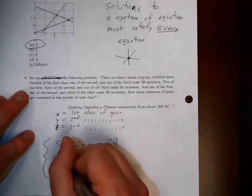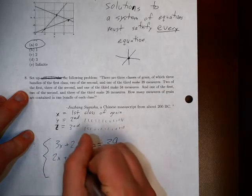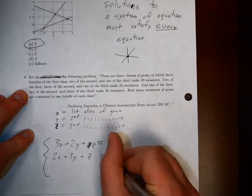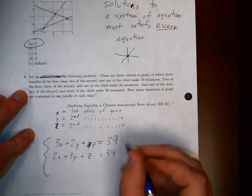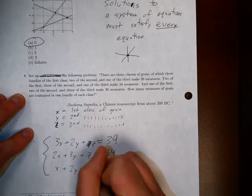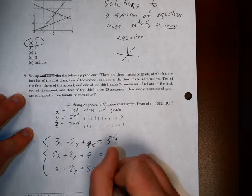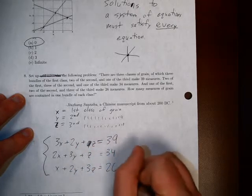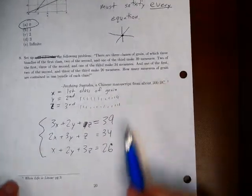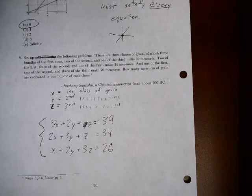Two of the first, plus three of the second, plus one of the third, makes 34. And one of the first, plus two of the second, plus three of the third, makes 26. And so this would be how we would take these sentences and turn them into a system of equations.